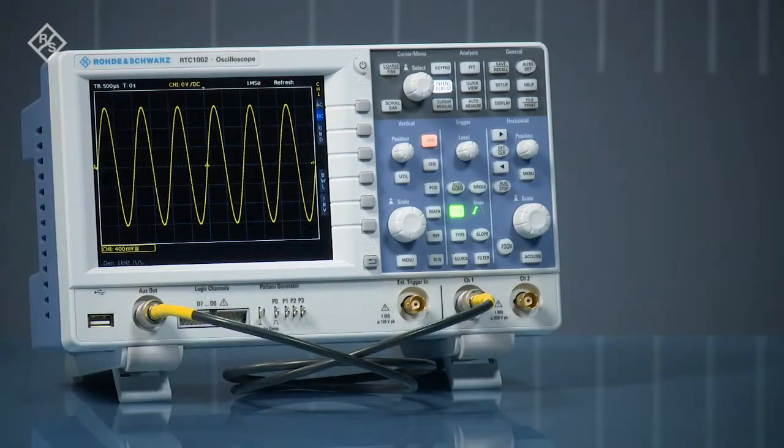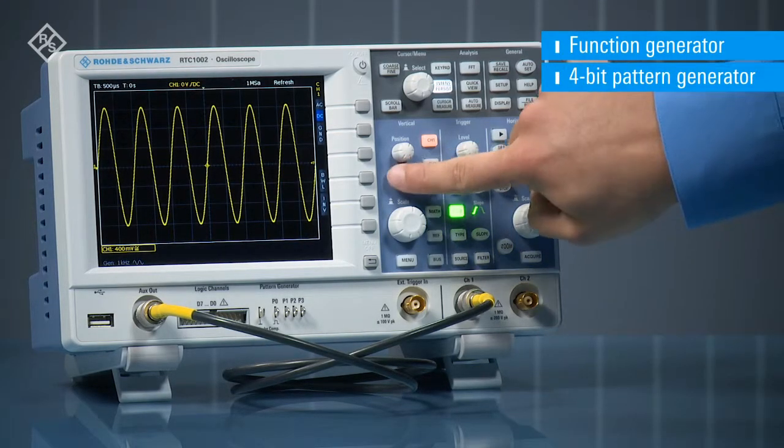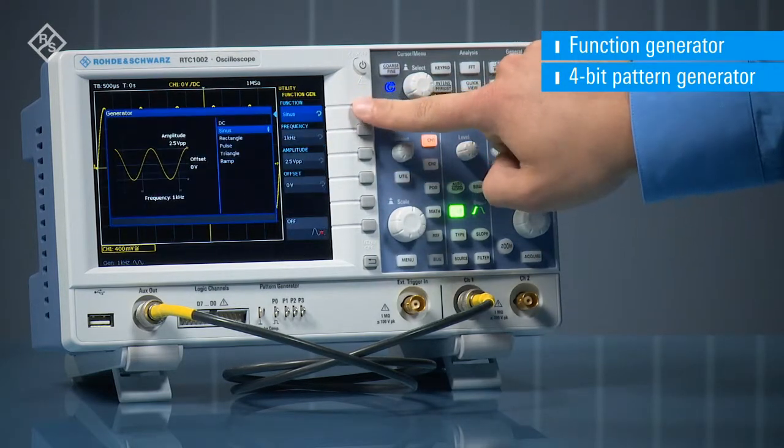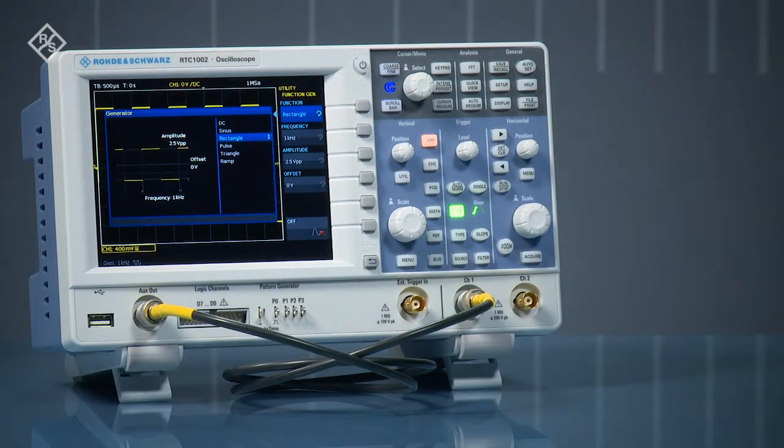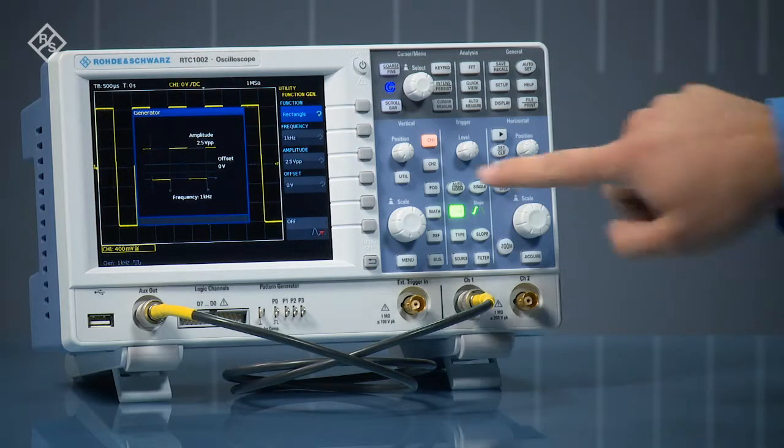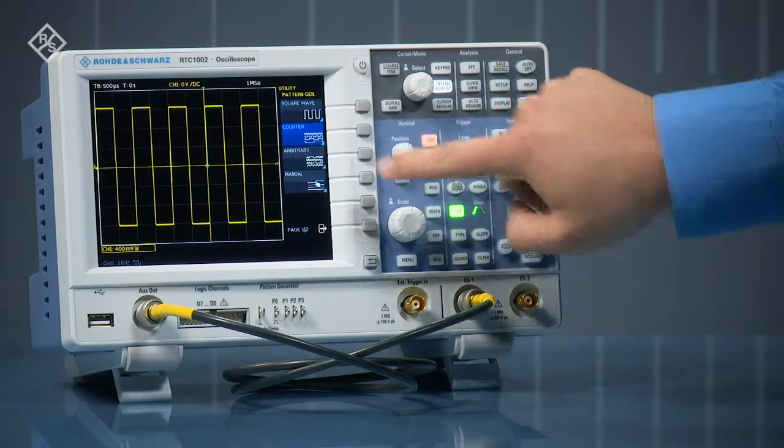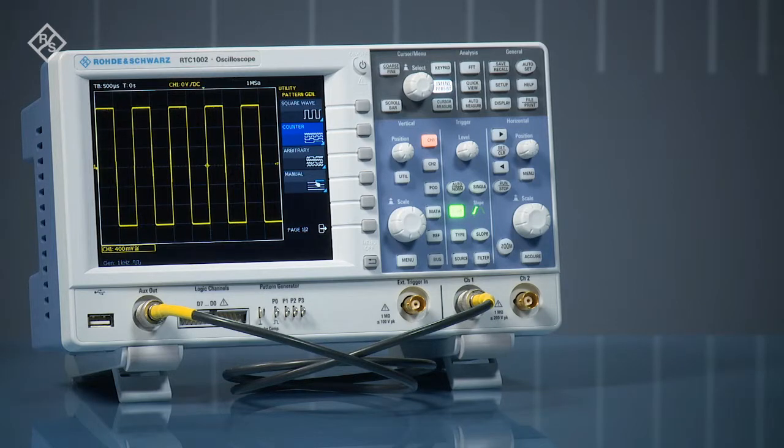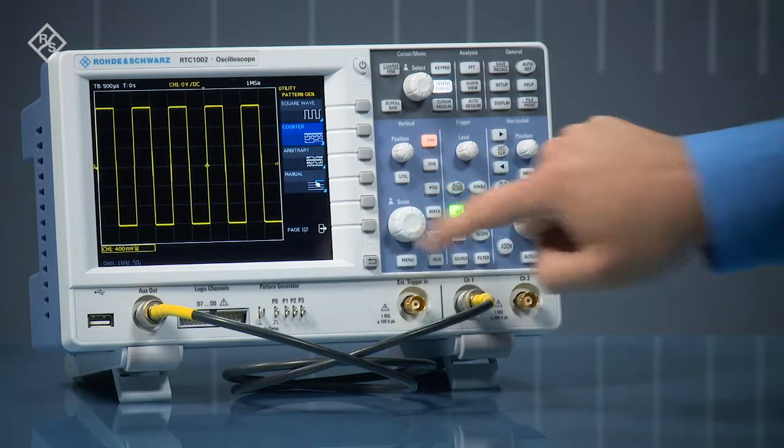RTC 1000 series oscilloscopes feature an integrated function and pattern generator option. Use the generator as a source for a variety of wave shapes. A preview shows key parameters. Easily adjust settings like amplitude and frequency. Use the 4-bit pattern generator to create stimulus for your device under test. Or output packets for industry standard serial buses.